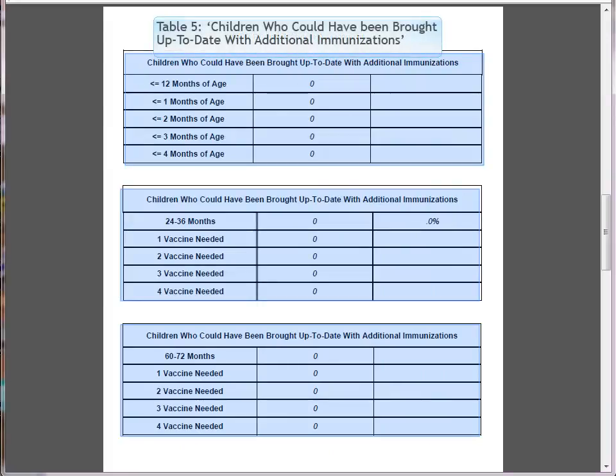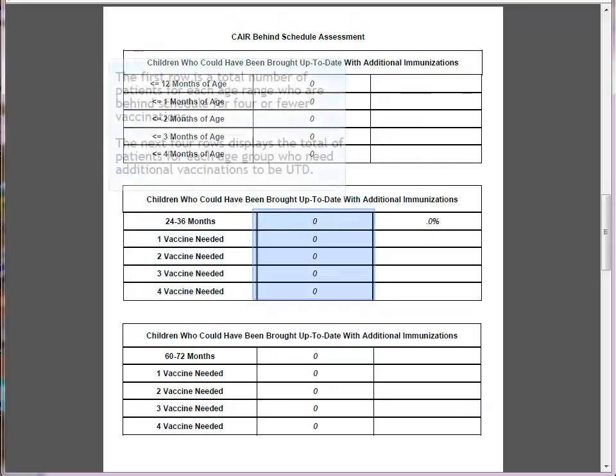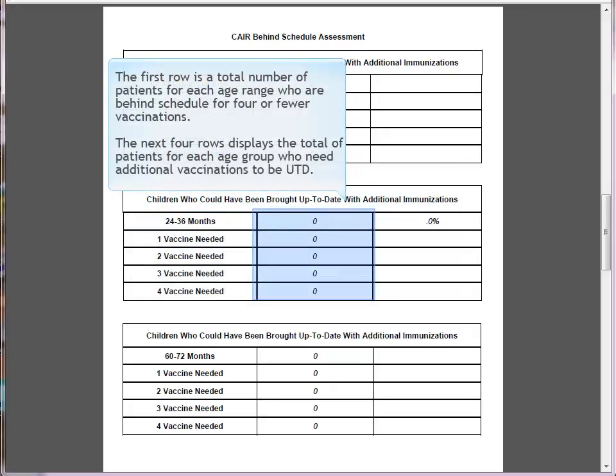Table 5: Children who could have been brought up to date with additional immunizations. For each table, the first row displays the age range of patients examined. The next four rows list the number of vaccines needed to be up to date. In the second column, the first row is the total number of patients for each age range who are behind schedule for four or fewer vaccinations. The next four rows display the total number of patients in each age group who needed additional vaccinations to be up to date.